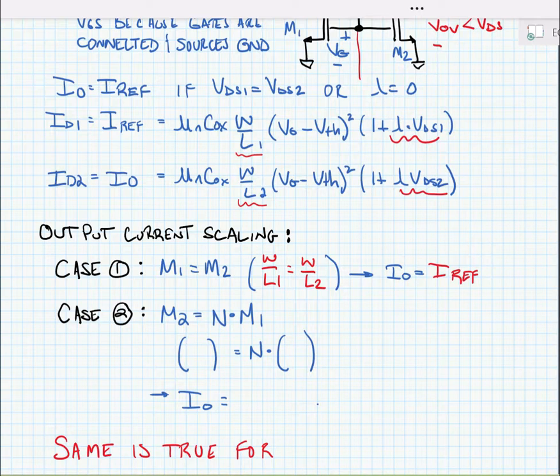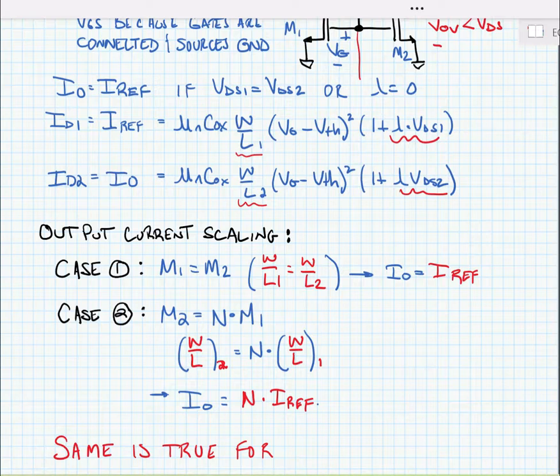The second case we have is what if M2 were equal to N times M1. In other words, what if W over L2 is equal to N times W over L1. In this case, the output current would be equal to N times the reference current. So this is a powerful statement because what this means is that we don't have to make the reference current the same size as the bias current that we're trying to generate.